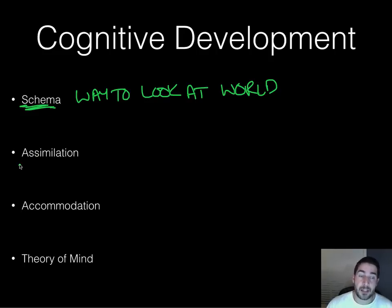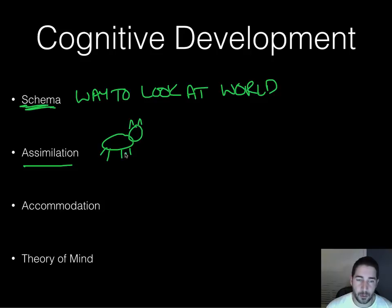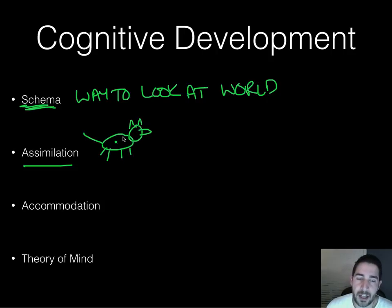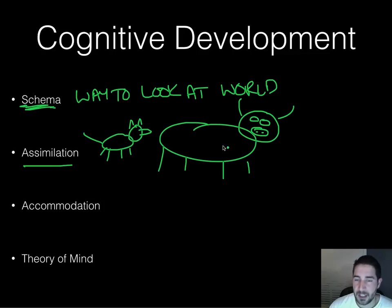When they have that schema and find something new, they try to assimilate it into their current schema. Assimilate means taking something new and trying to fit it into what you already know. For instance, if a child learns that a four-legged animal is a dog, and then sees a cow, they'll call the cow a dog — because their schema says: animal with four legs equals dog. They're trying to fit this new animal into what they already know.